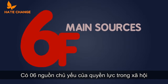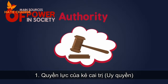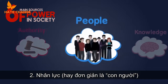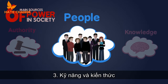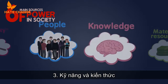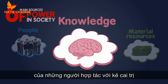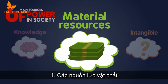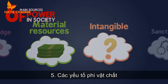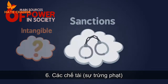There are six main sources of power in society: 1. The authority of the ruler. 2. Human resources, or simply put, the people. 3. The skills and knowledge of those who cooperate with the ruler. 4. Material resources. 5. Intangible factors. 6. Sanctions.